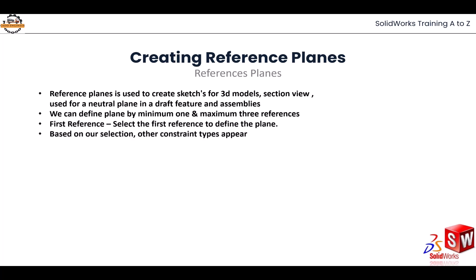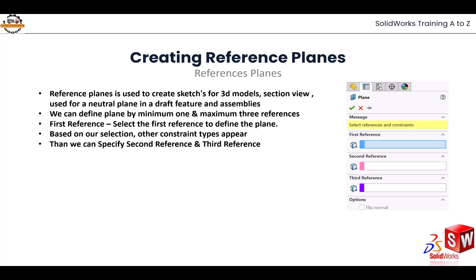When we define the first reference, according to our selection, other types of constraints appear. We can then specify the second and third references according to need and the available conditions on the body.